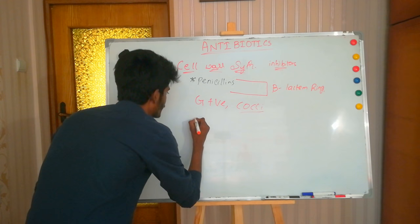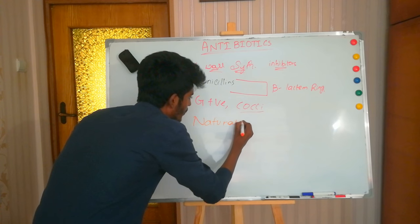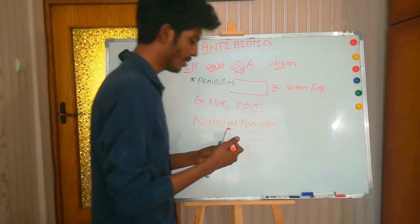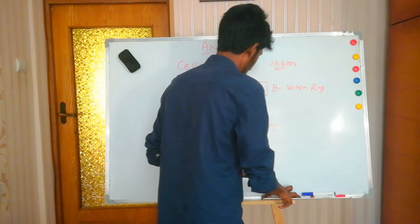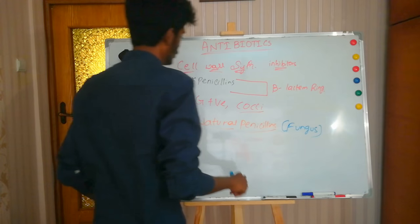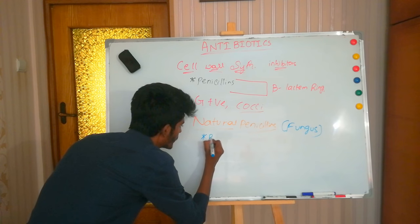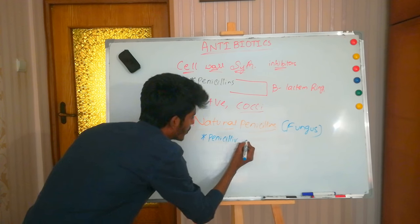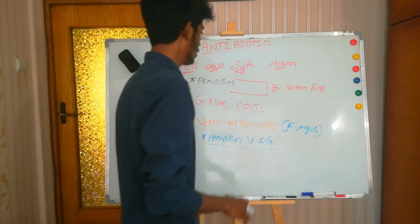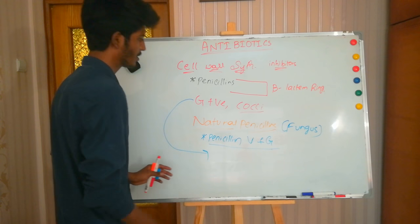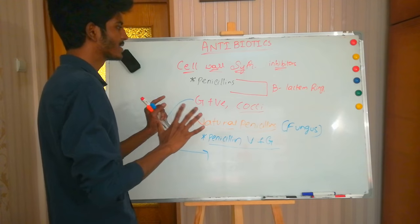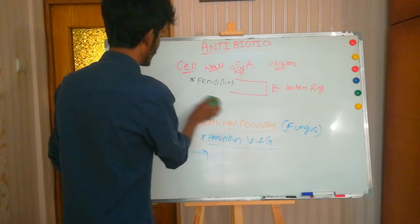Natural penicillins are derived from something existing in nature — specifically derived from fungi. These are the antibiotics which belong to the natural penicillins subgroup, and they naturally have the spectrum of action of gram-positive bacteria and cocci.